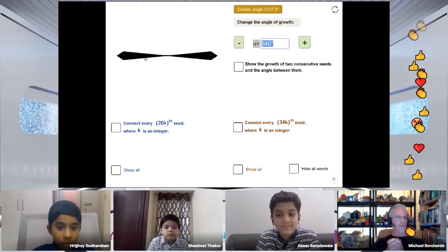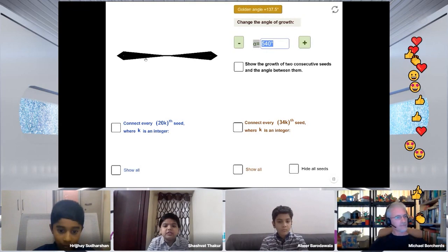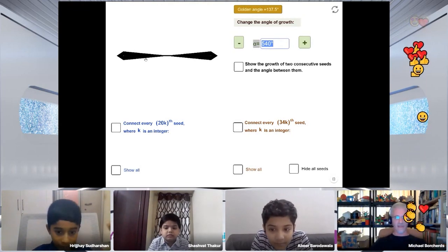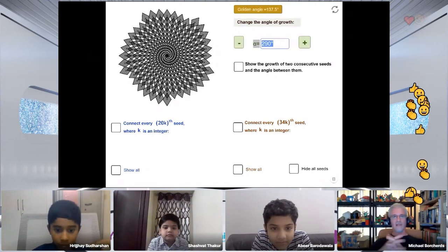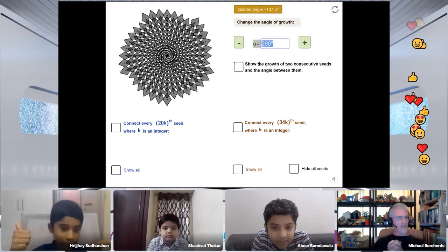Okay, great angle. Shashvat, what angle would you like? I would like the angle 290. 290, another giant angle. Let's see what that's going to do. Wow, that's a pretty cool pattern, isn't it? Do you like that pattern, Shashvat?